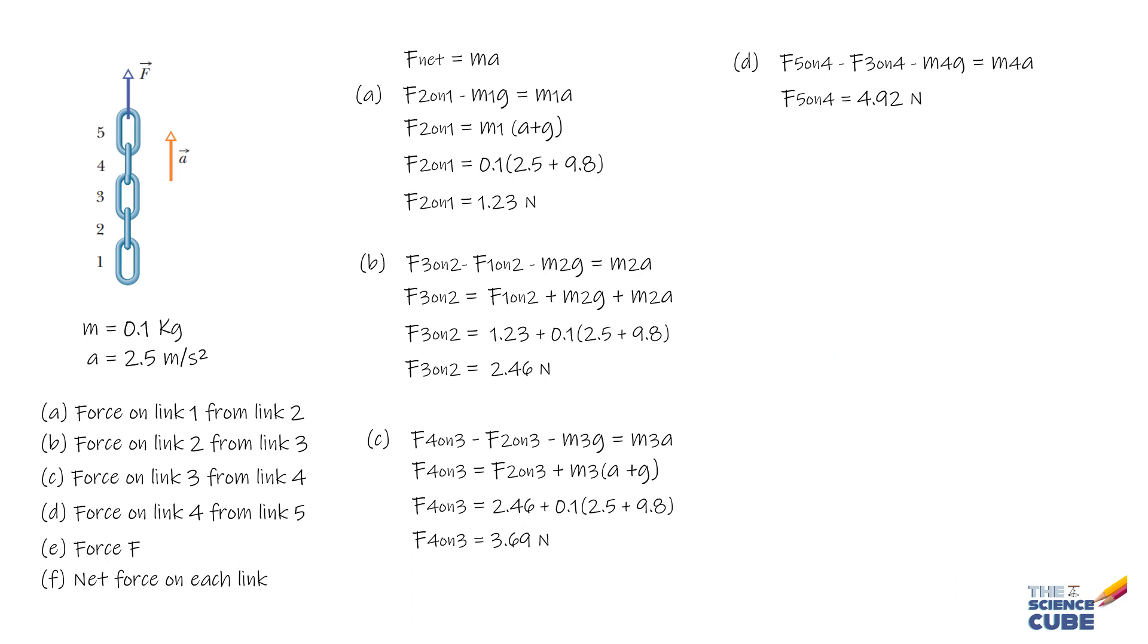Next, we have to find the force F on the top link from the person lifting the chain. Again, making free body diagram and writing Newton's second law, we get F minus F4 on 5 minus M5G equals M5A, or F equals F4 on 5 plus M5 times (A plus G). When you calculate this, you get 6.15 Newtons.